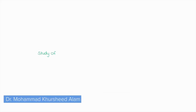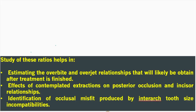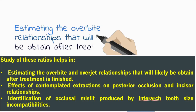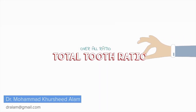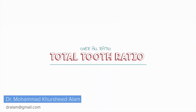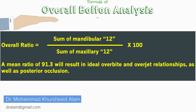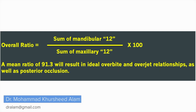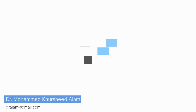The study of these ratios helps in estimating the overbite and overjet relationships that will likely be obtained after treatment is finished. The total ratio measures the percentage relationship of the sum width of mandibular tooth material from the first molar to first molar width to that of the corresponding maxillary dentition. A mean ratio of 91.3 will result in ideal overbite and overjet relationships, as well as posterior occlusion.